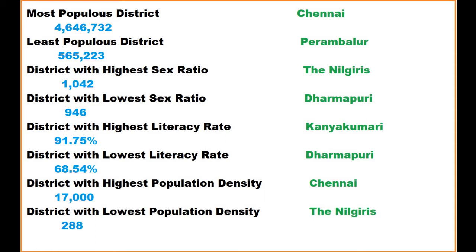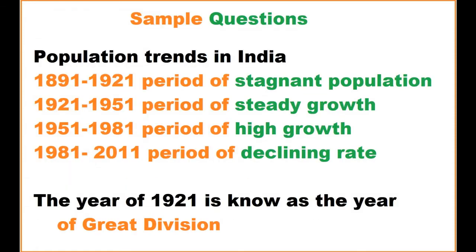The district with the lowest sex ratio is Dharmapuri at 946. The district with the highest literacy rate is Kanyakumari at 91.75%. The district with the lowest literacy rate is Dharmapuri at 68.54%. The district with the highest population density is Chennai at 17,000 and the lowest population density is Nilgiris district at 288.